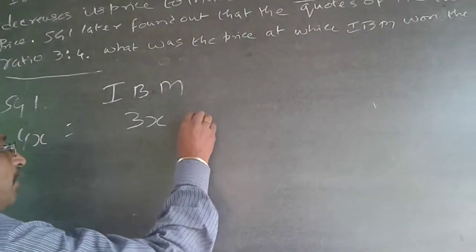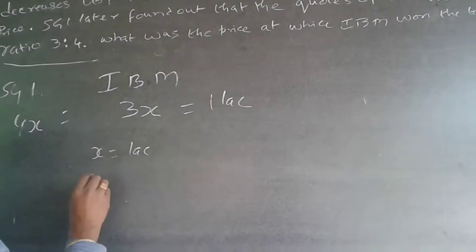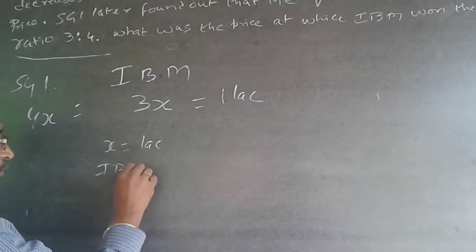The difference is 1 lakh will be equal to 1 lakh. Solving this, X will be equal to 1 lakh. And IBM quotation will be equal to 3 lakh.